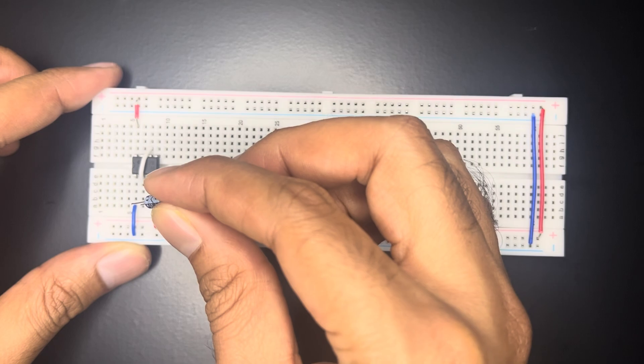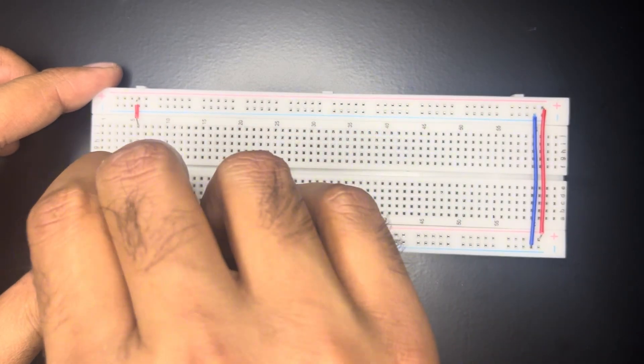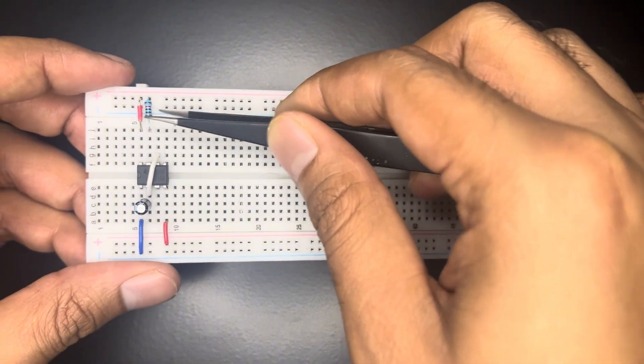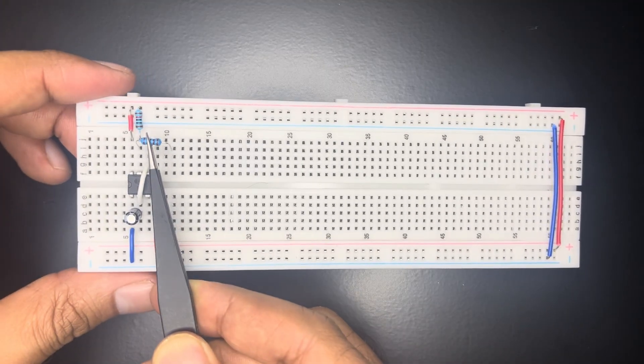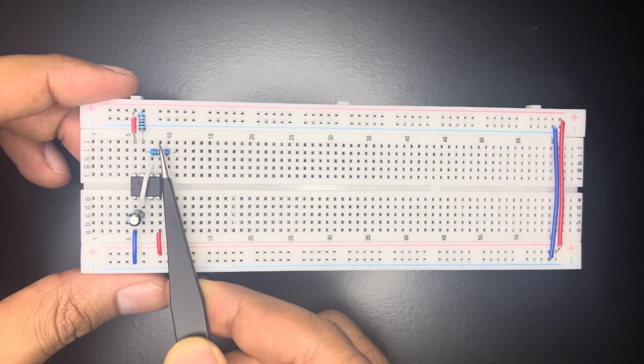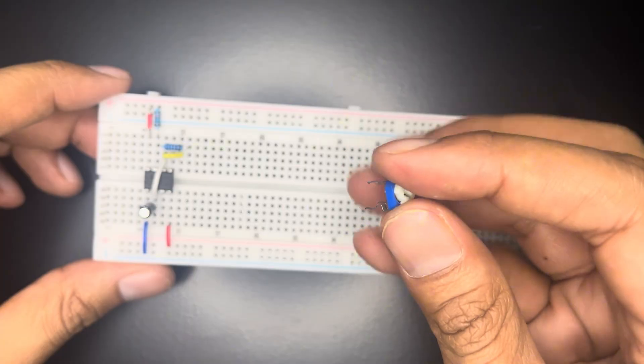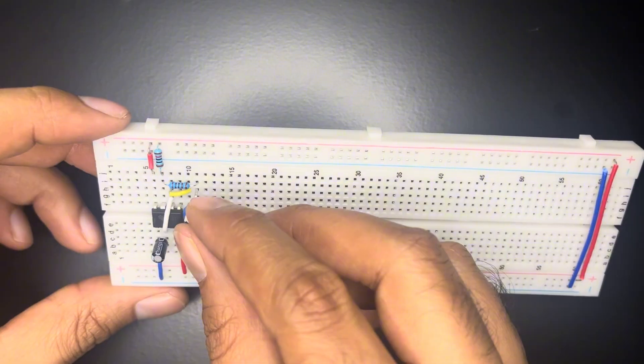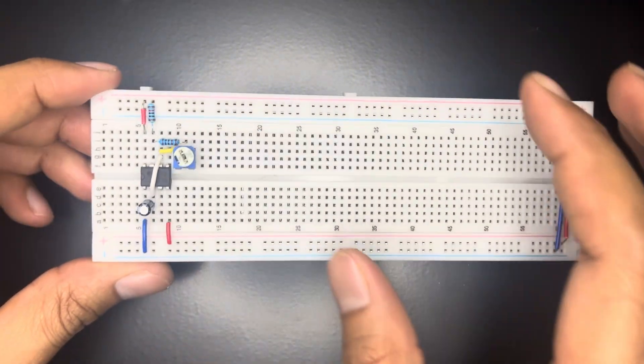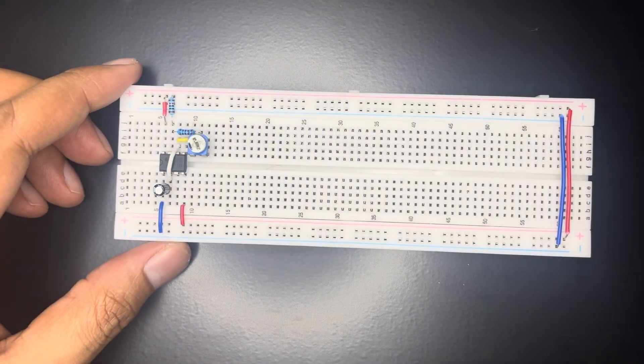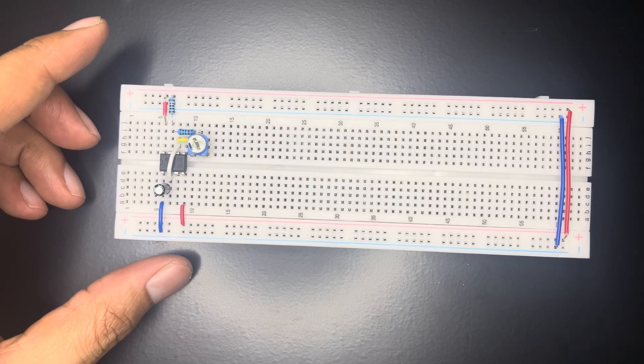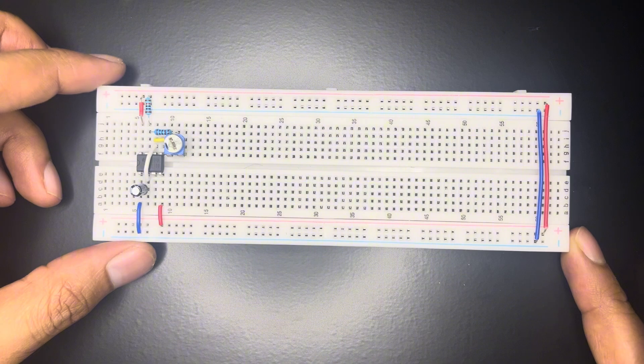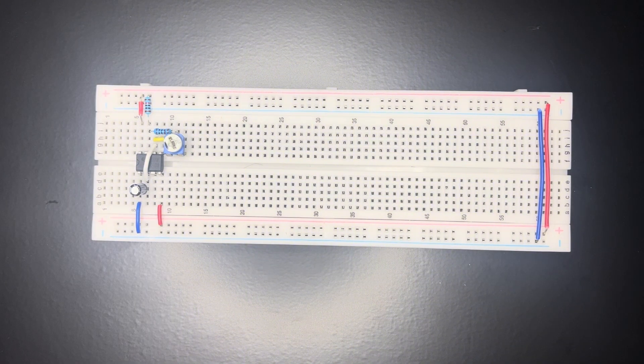10uF capacitor is connected between pin 2 and ground. 10k resistor is connected between VCC and discharge pin 7. From pin 7 to 6, a 1k resistor and a 10k potentiometer are connected in series. The potentiometer allows us to change the resistance which directly changes the speed of the pulse. The 555 timer is used here in astable mode, which means it continuously produces on and off pulses to the output pin 3.